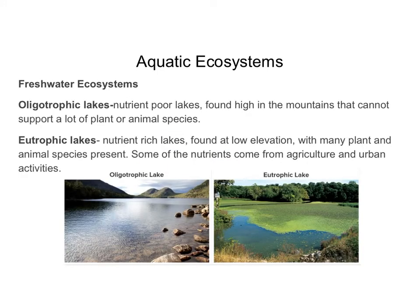Lakes can be categorized into two types. Oligotrophic lakes are nutrient-poor lakes found in the mountains that cannot support a lot of plant or animal species. The water tends to be very clear because not much algae or bacteria can live there. A big reason is reduced oxygen — as you increase in altitude, there's less oxygen in the air and therefore less oxygen in the water.